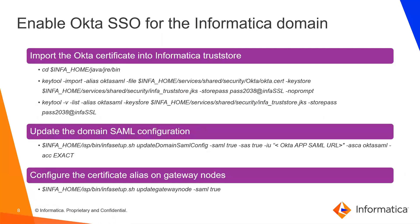Once the certificate is imported into the Informatica trust store, the next step is to update the domain SAML configuration by running the Update Domain SAML Configuration command. To run this command, we need to shut down the domain. In this command we need to pass one parameter — the Okta app SAML URL, which is the URL that was visible on the download certificate page. After running this command, we can also run a second command to update the gateway node. So first we will shut down the Informatica domain and then run both commands one by one.